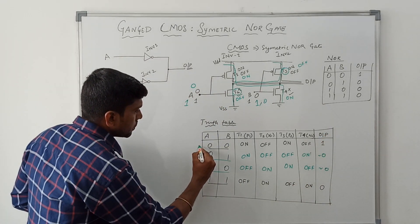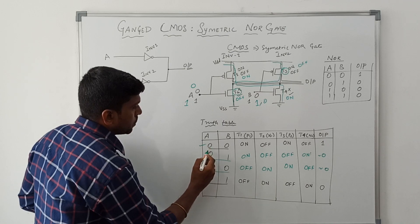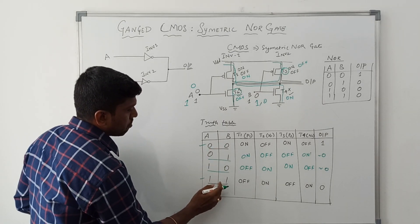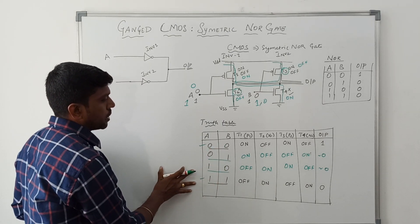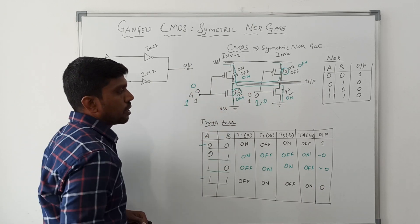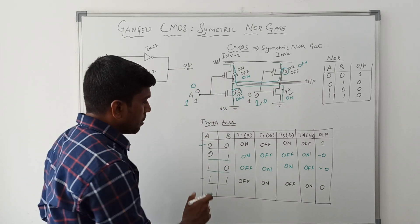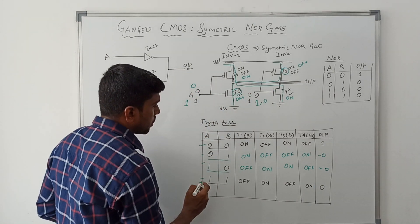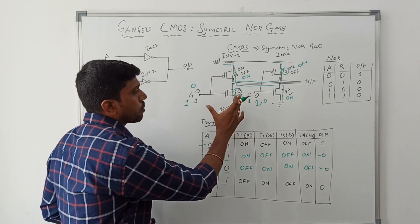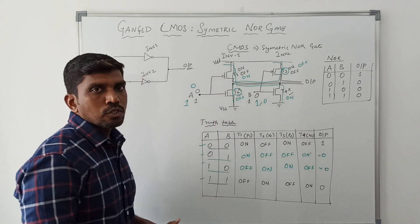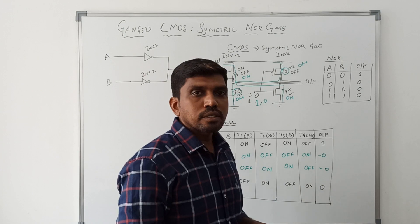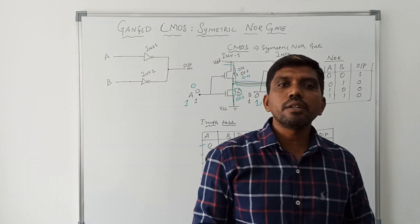So for A=0, B=0 and A=1, B=1 the structure operates as usual. For the remaining two input values — A=0, B=1 and A=1, B=0 — this structure operates like a pseudo NMOS. I hope you understand the concept very well.